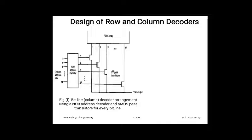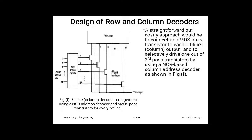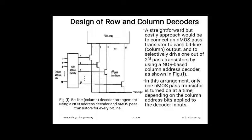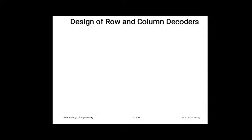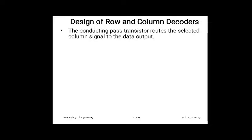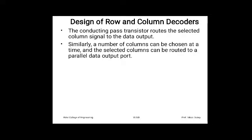This straightforward approach is costly because it uses a pass transistor for each column line. One NMOS pass transistor is connected to each bit line, selectively driven by a NOR based column address decoder. In this arrangement, only one NMOS pass transistor is active at a time depending on the column address applied to the decoder input. The conducting pass transistor routes the selected column signal to the data output.